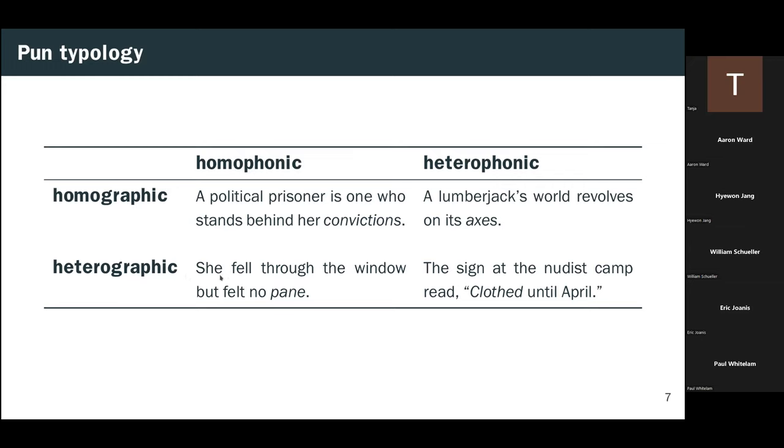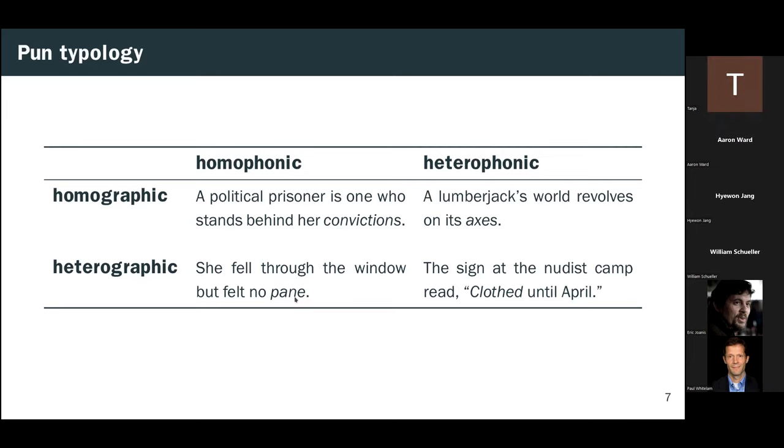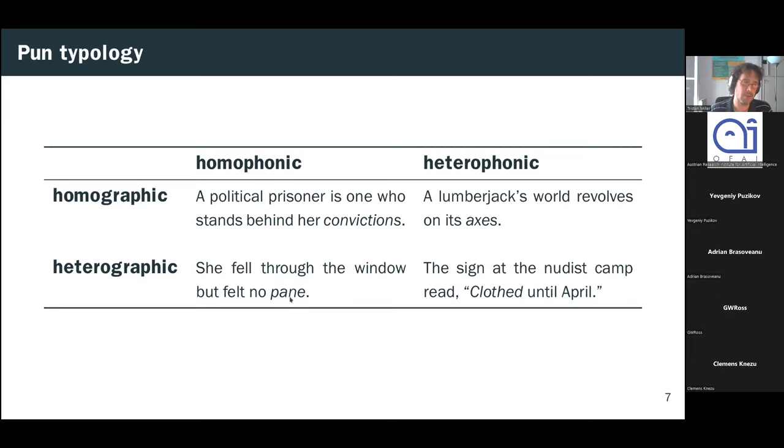On the other hand, we might have a pun which is homophonic, but heterographic. So she fell through the window, but felt no pain. So the pun here is P-A-N-E, referring to the glass of a window. But the latent target pain, that is when something hurts, is spelled P-A-I-N. Pronounced the same, but spelled differently.